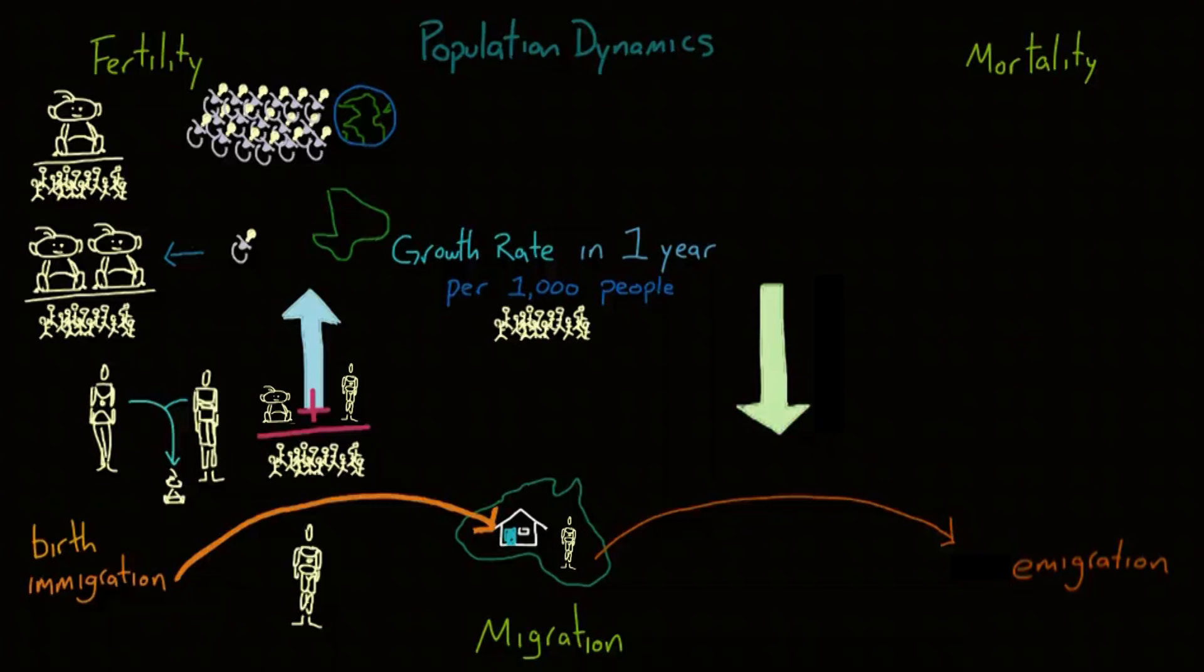Now, we can look at the factors that decrease a country's population, and you guessed it, death and emigration. When we look at the number of people who have died, we often refer to mortality rates, which are the number of deaths per 1,000 people. You have to be kind of careful when looking at mortality rates, especially when comparing the mortality rates of different countries.